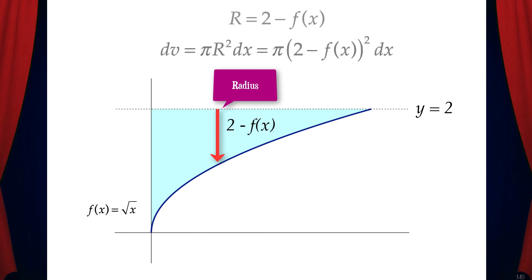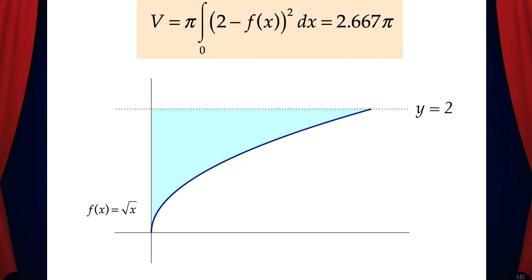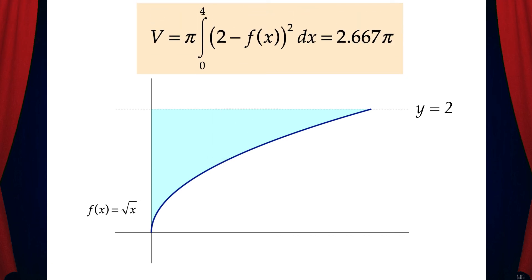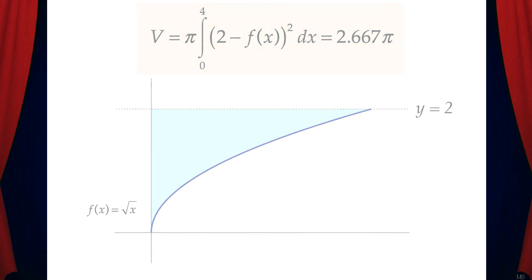Now we can write dv, which is pi r squared dx, or pi times the quantity (2 minus f of x) squared dx. The volume is pi times the integral from 0 to 4 of the quantity (2 minus f of x) squared dx, which gives us 2.667π.